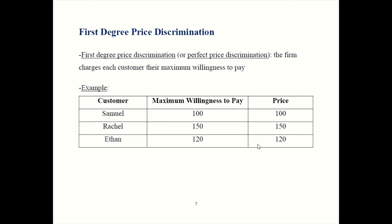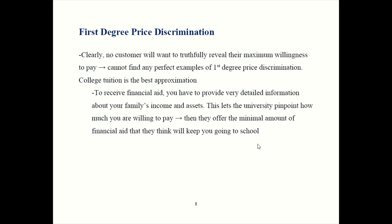So not very hard. Now this works out just fine if I know what each consumer's maximum willingness to pay is, but in reality we don't know that. So perfect price discrimination doesn't actually happen in the real world. There are some examples that come close, but it doesn't happen quite like that.